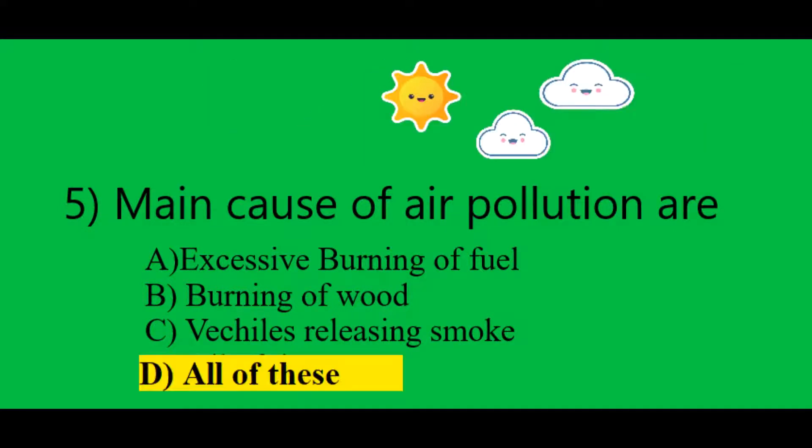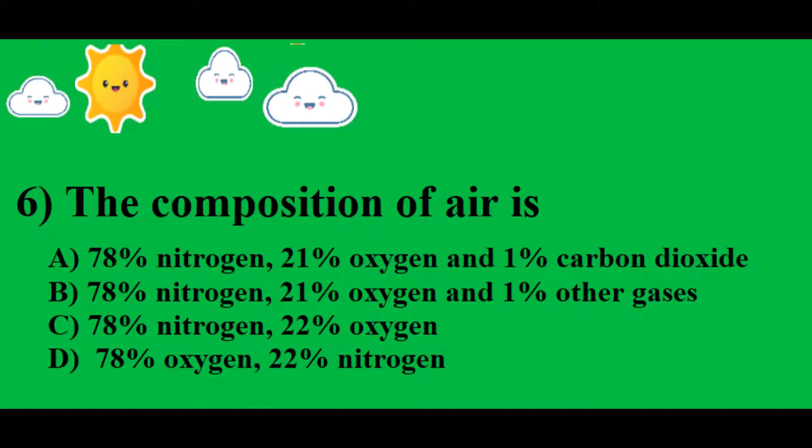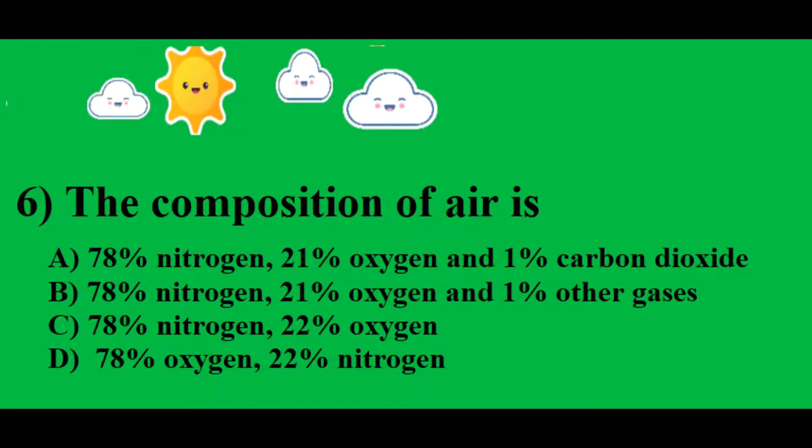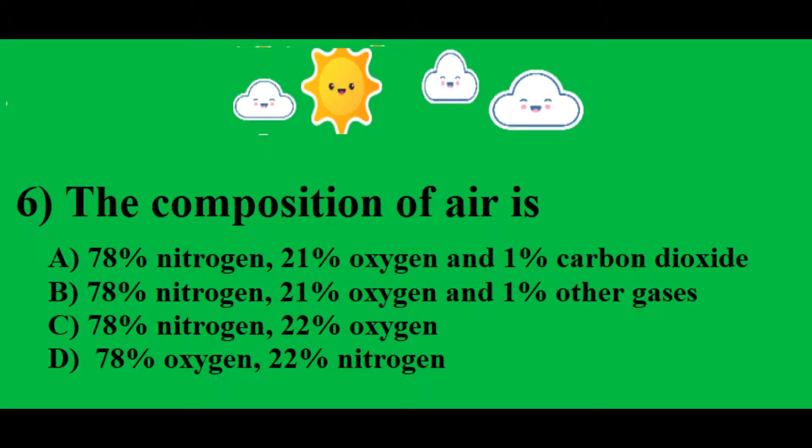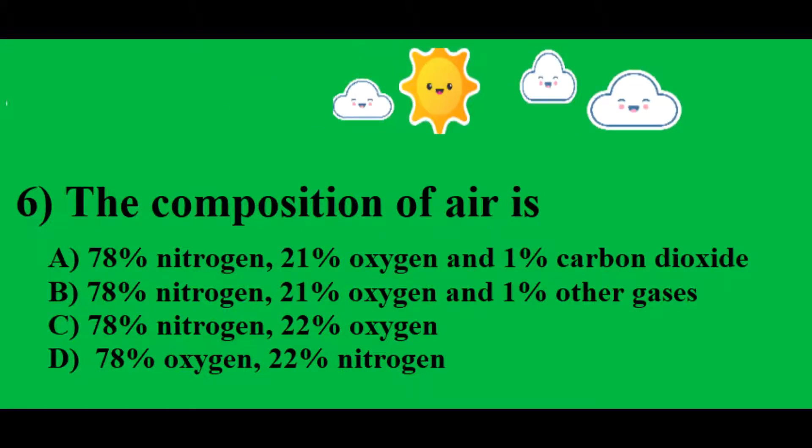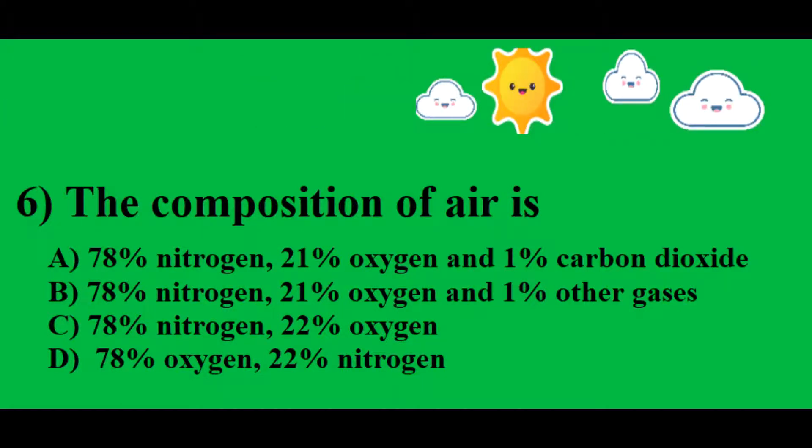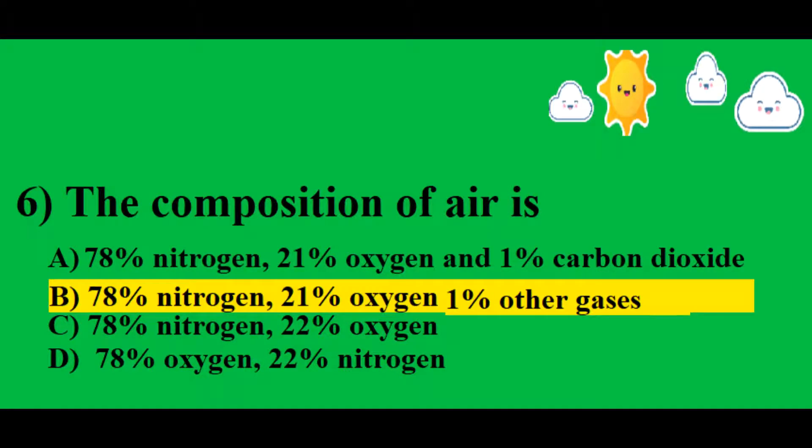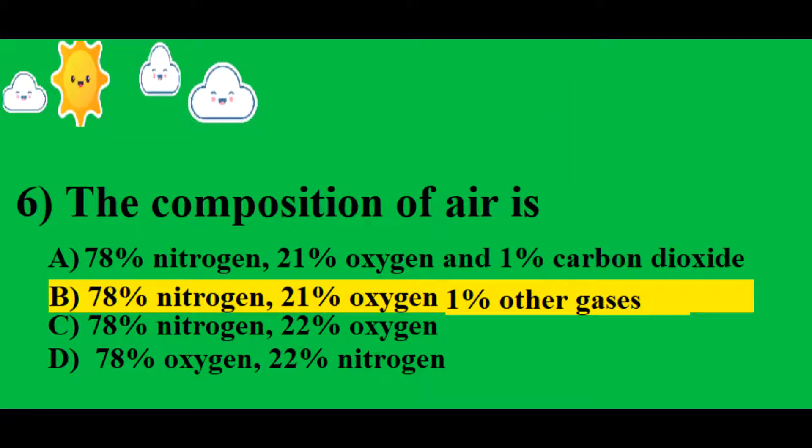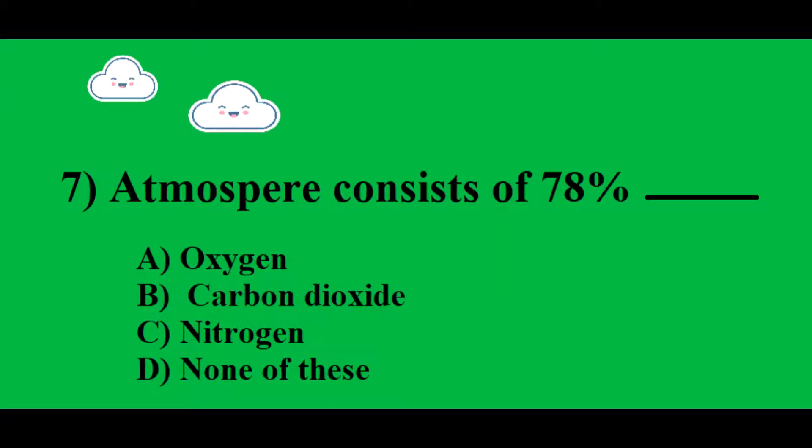Fifth question: Main cause of air pollution are D) All of these. Sixth question: The composition of air is B) 78% nitrogen, 21% oxygen, 1% other gases.